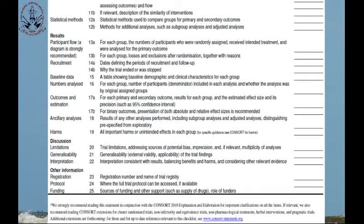For binary outcomes, presentations of both absolute and relative effect size must be mentioned. For ancillary analysis, results of any other analysis performed — such as subgroup analysis or adjusted analysis — should be mentioned. For harms, any unintended harm must be reported. For discussion, we write about limitations, generalizability, and interpretation. Interpretation must be balanced in terms of benefits and harms. Other information such as registration number, whether the full trial protocol was assessed, and funding details should also be mentioned.